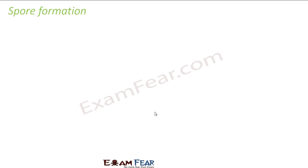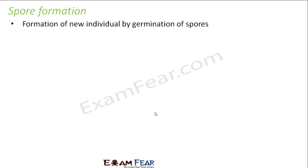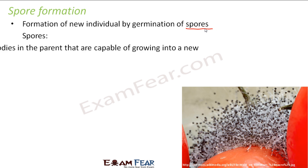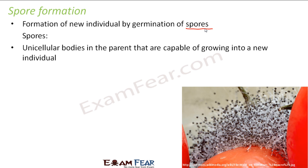The next type of reproduction is spore formation, where formation of a new individual happens by germination of spores. Spores are unicellular bodies present in the parent that are capable of growing into a new individual. They are small bodies present in the body of the parent organism.